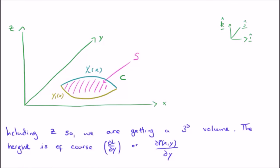Therefore, including z, we are getting a three-dimensional volume. The height of this volume has the functional form ∂L/∂y, or we could rewrite it as ∂P(x,y)/∂y. We're actually talking about a three-dimensional function. We have the surface which lives in the xy-plane as a function of x and y, but there's a certain height associated with this, and the value of that is ∂L/∂y.